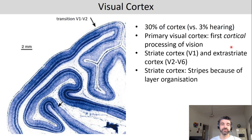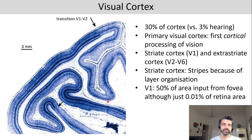The striate cortex is called striate cortex because it has stripes, which you can see here, and this is because of the layer organization of V1. The other areas do not have this clear stripe and layer organization. Even though the fovea only makes up 0.01 percent of the retina, it makes up 50 percent of what is processed in V1.